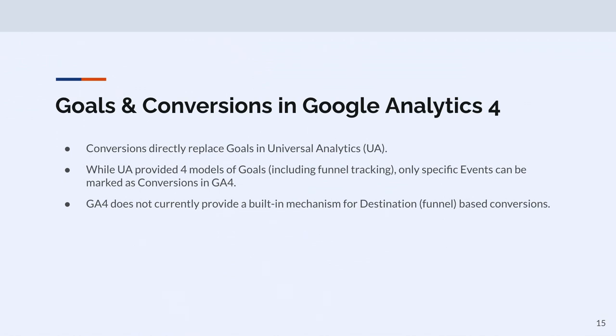Goals and conversions are different in GA4 than in Universal Analytics. Universal Analytics had four types of goals, including funnel tracking, pages, time on site, and specific events. In GA4, conversion is the new word for a goal, and it ties one-to-one with some form of event — everything is events in GA4 all the way down. There's not really a great mechanism for destination funnel tracking in GA4 currently.